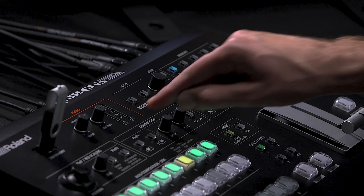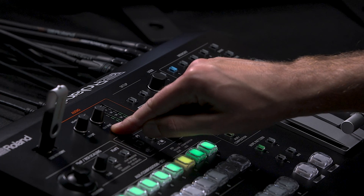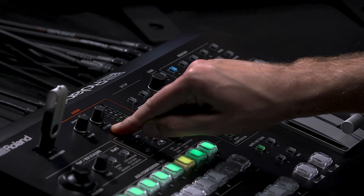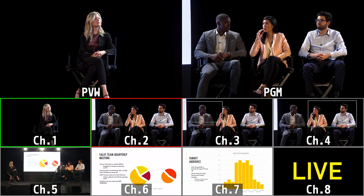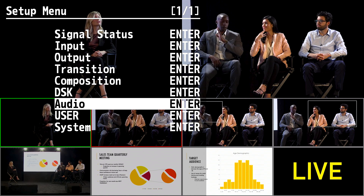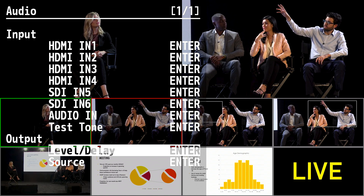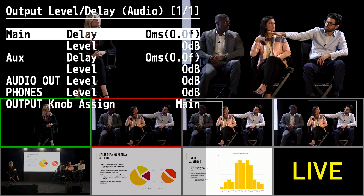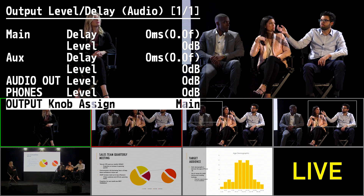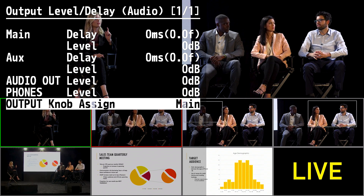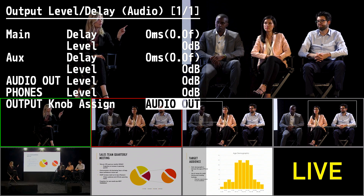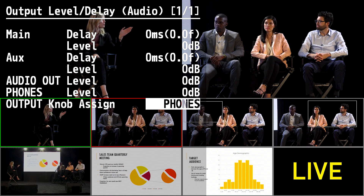Last, I'm going to show you how to change the audio output knob assignment. Notice there's an output knob in the audio section of the panel. Press the menu button, enter the audio menu, and go to output level/delay. Here on the last option, you can change the output knob assignment to either be the main mix, audio out, or the headphones.